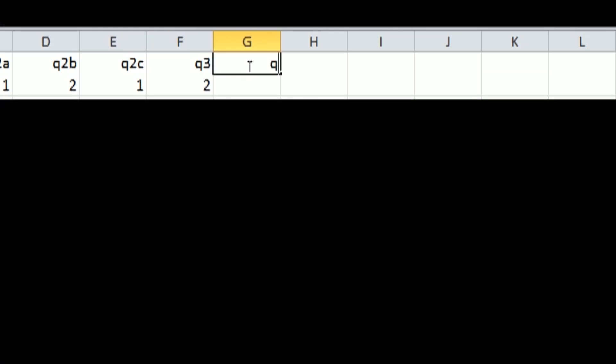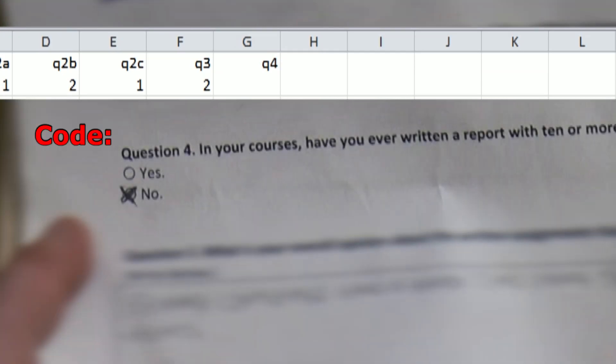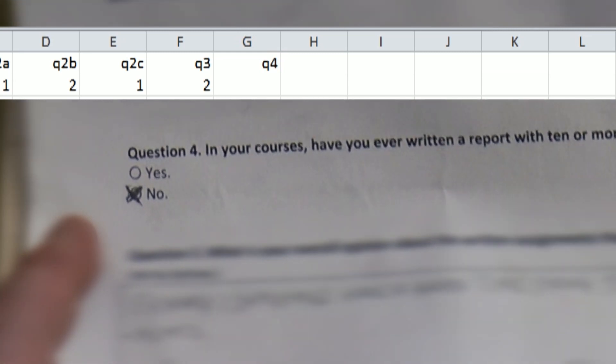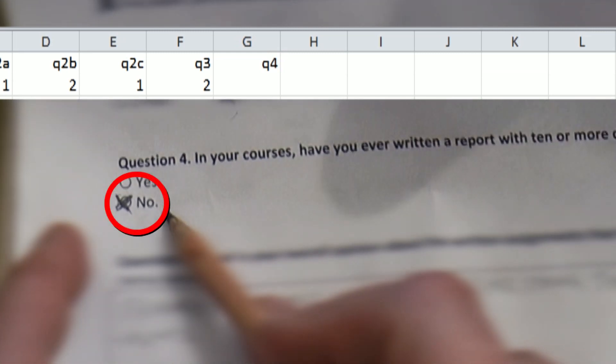Okay, question 4, Q4. I code this dichotomous question with the digit 1 for yes and 2 for no. In this example I write a 2.